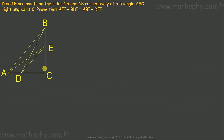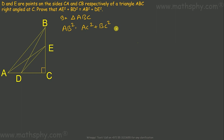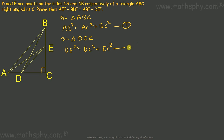This is right angle at C, it means AB will be the hypotenuse. In triangle ABC, AB square will be equal to AC square plus BC square. Let's take this as equation 1. In triangle DEC, DE square will be equal to DC square plus EC square. Let's take this as equation 2.